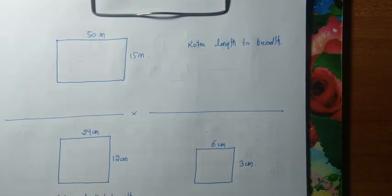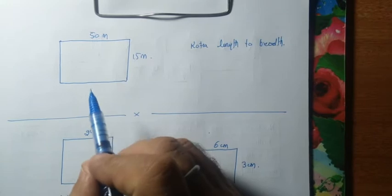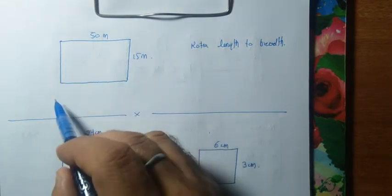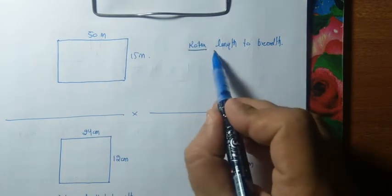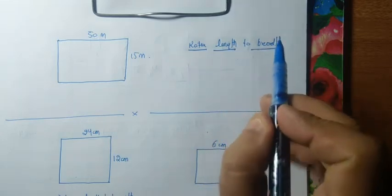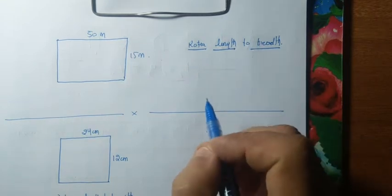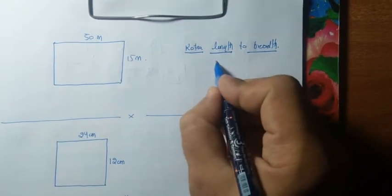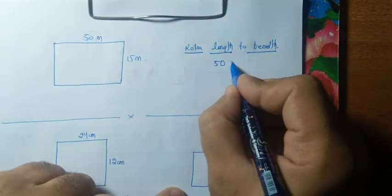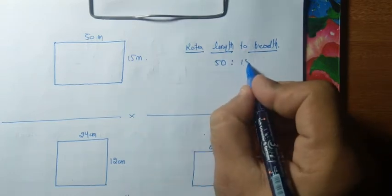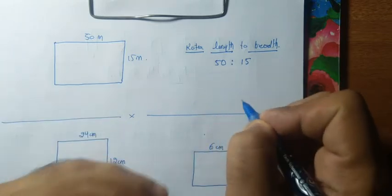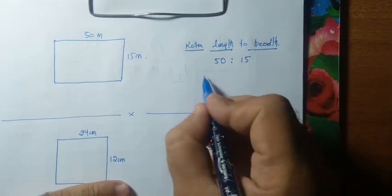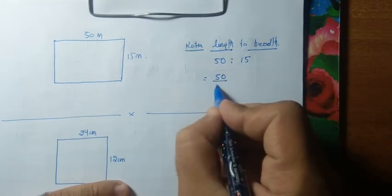Let me explain how to write ratio and how to solve it. Suppose this is a playground — its length is 50 meters and breadth is 15 meters. The question is: you have to write the ratio of length of the ground to the breadth of the ground. That means this is equal to 50 by 15.